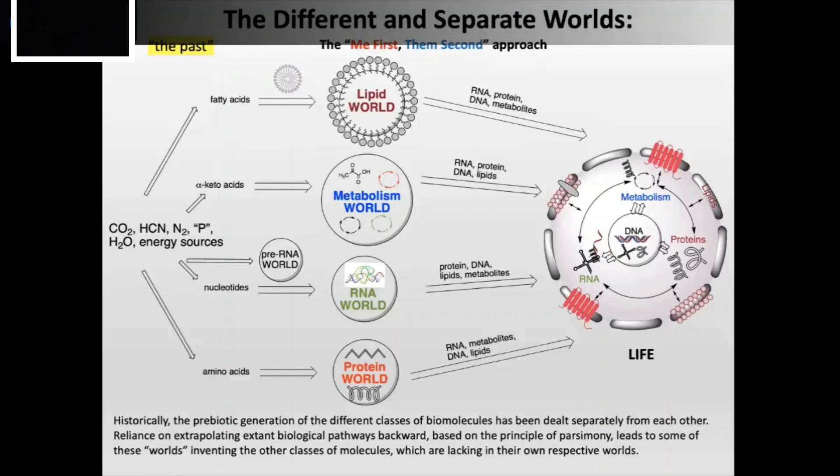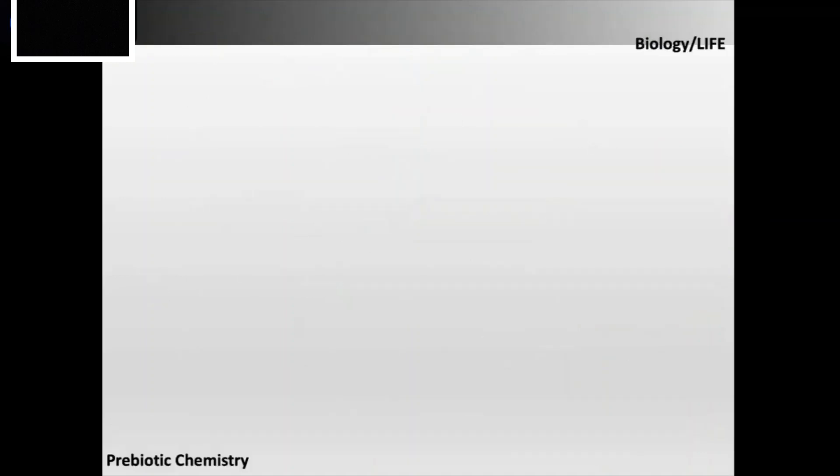These kinds of different parts of the problems were being attacked and people came up with these models. And these are all because you are trying to run biology backwards to what was earlier there before. That means it's like you are looking at the finished product and you are looking at the raw materials and you are trying to draw a straight line between two points that are separated by nearly billions of years. And that leap has its own problems.